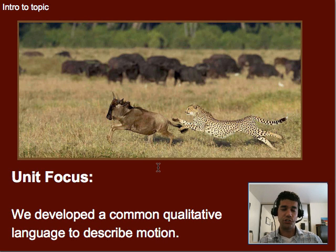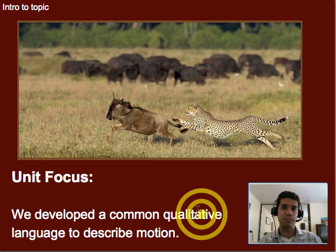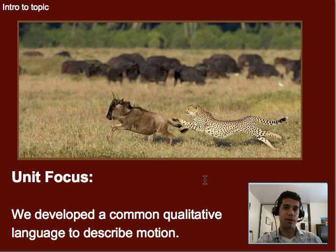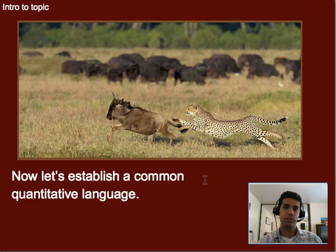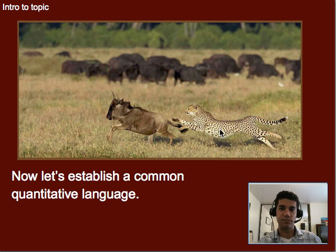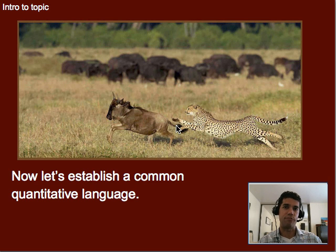This unit, before we can really discuss changes in motion, we need to develop a common language for motion. Previously we talked about qualitative language — describing it in words or conceptually — but now let's go ahead and introduce the idea of a quantitative language. So instead of saying this cheetah has a certain velocity or speed and it's in this direction, we can now talk about exactly how fast that speed and velocity is and calculate it.